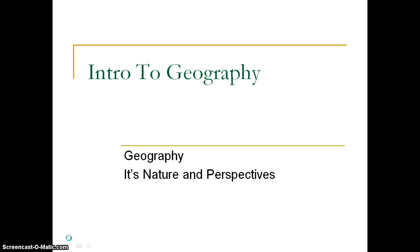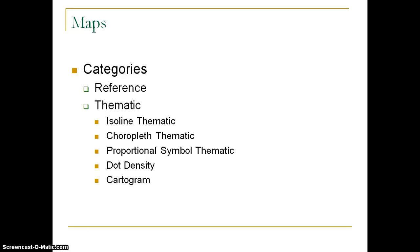Hello everyone, and welcome back to another session of AP Human Geography with Mr. Elrod. We're finishing up Unit 1, The Basics of Geography, and today we're going to be looking at maps and the different categories of maps — basically the different types of maps you might find, how we categorize them, and what exactly it is that they're showing.